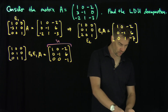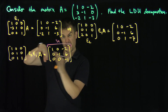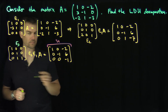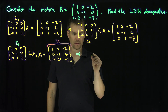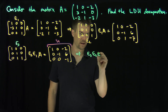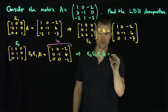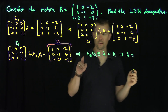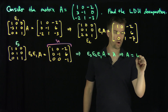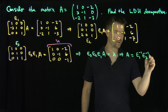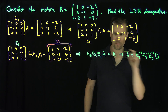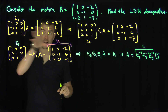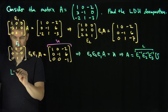So we have E3 E2 E1 A equals U, which allows me to write A as E1 inverse E2 inverse E3 inverse times U. This product of inverses is going to be my L. We can easily extract those inverses because these are elementary matrices.